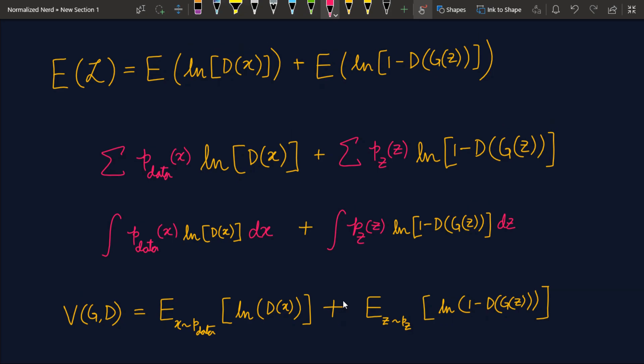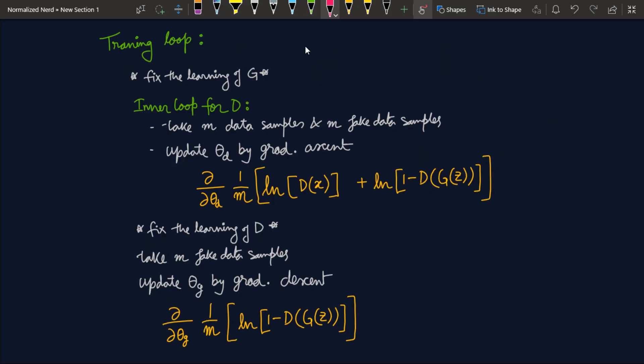Now I am going to tell you how we optimize this function in practice. Well this is our big training loop. And just like every other neural network we have to optimize the loss function using some stochastic process. And I am using here the stochastic gradient descent. Okay? So first we enter our big training loop. And we fix the learning of G. And then we are entering the inner loop for D. Well this loop will continue for k steps. Okay? And in this loop first we take m data points from the original distribution and m data points from the fake data. Okay? And then we update the parameters of our discriminator by gradient ascent. Why? Because remember that our discriminator is trying to maximize the value function.